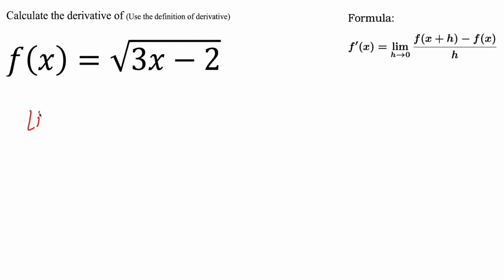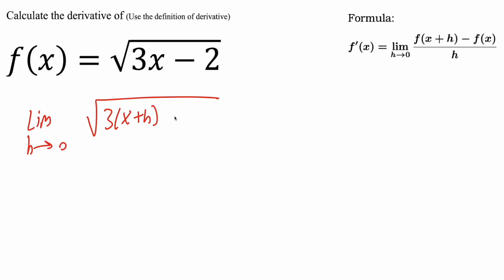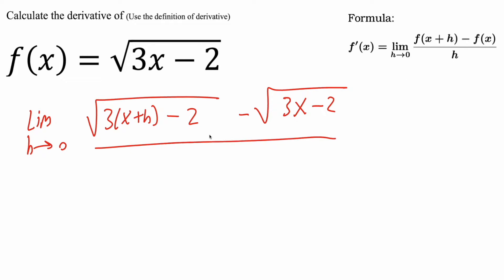This is going to involve limits. So we have the limit as h approaches zero. And wherever you see an x, you're going to replace it with x plus h. So we have the square root of three times (x plus h) minus two. But we're not done yet — we also have a minus f of x, so minus the square root of three x minus two. The whole thing is being divided by h.